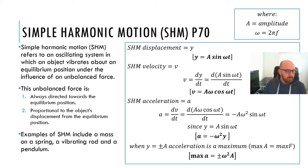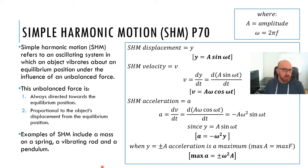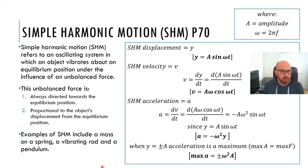The first thing to say about simple harmonic motion is that it's about oscillating systems. Simple harmonic motion refers to an oscillating system in which an object vibrates about an equilibrium position under the influence of an unbalanced force.